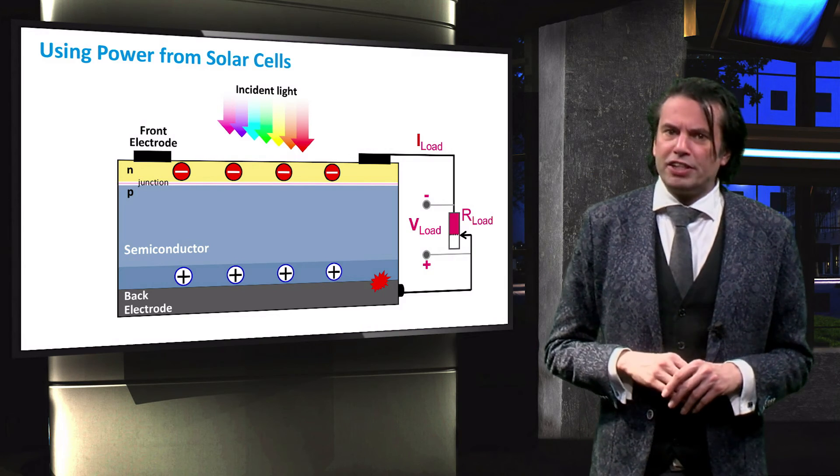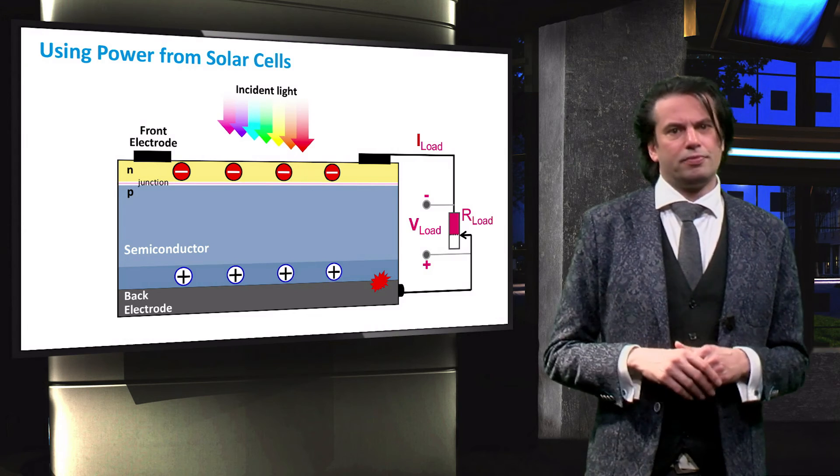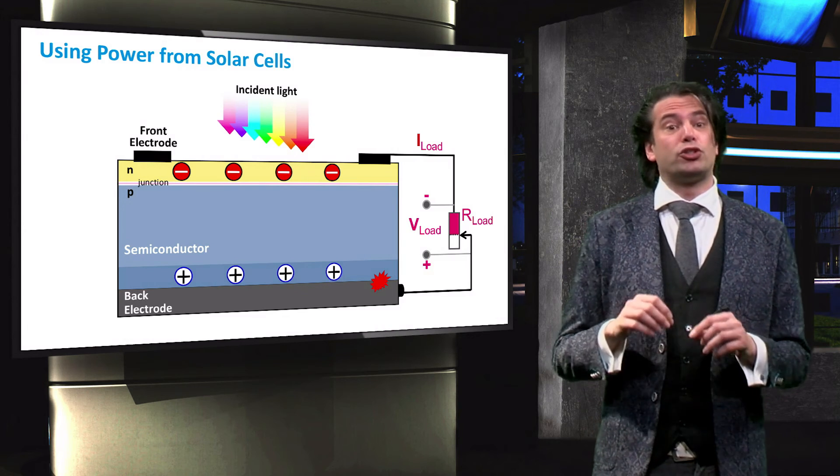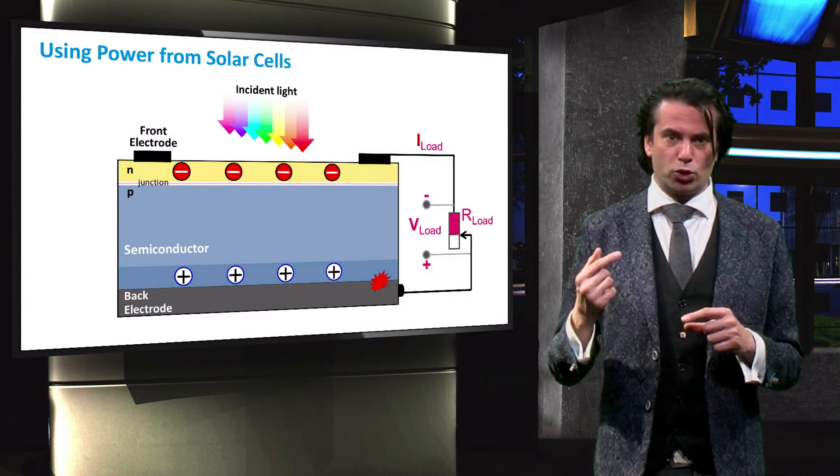The chemical energy of the electron hole pairs is now converted to electric energy. After the electrons have passed through the circuit, they recombine with holes at the metal absorber interface.